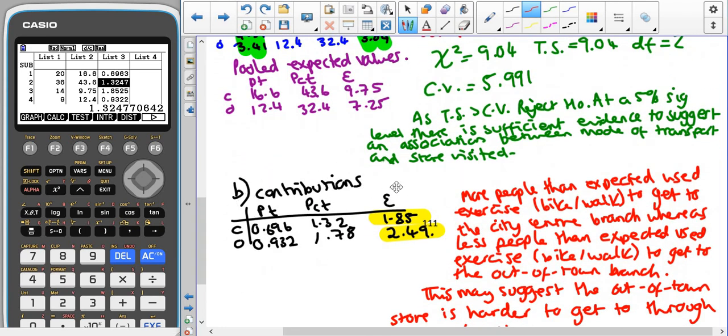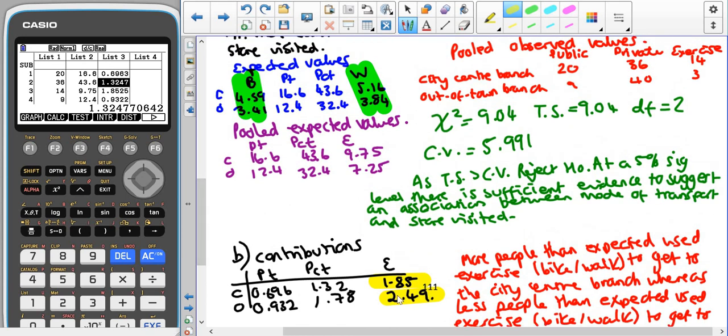When we click X we get a similar chi squared value again it'll be a little bit different just because I've rounded the expected values and when we come back out of that the third column here is our contributions which we need to write down and again you can see I've clearly labelled the table contributions. And then it's the two largest values that we need to talk about which is the 1.85 contribution and the 2.49 contribution. So then we're having to have a look back at our pooled expected and pooled observed values.